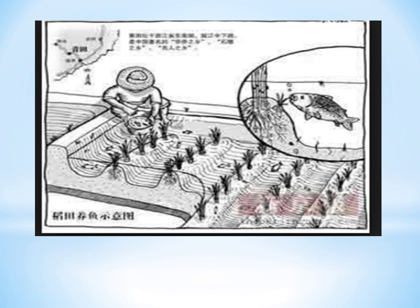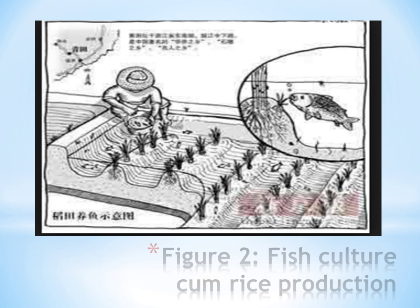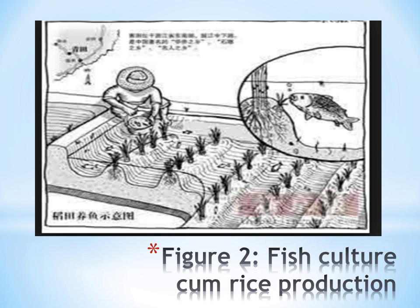This illustrates the culture of fish together with rice production. You can see the rice beds as well as the spaces in between each bed for fish rearing. This is a very good system that helps to maximize the use of land — as we discussed when talking about the importance of aquaculture.